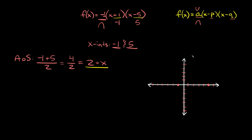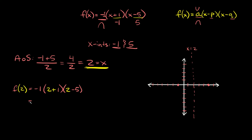We can draw that vertical line at x equals 2 as our axis of symmetry. To find the vertex, we plug in x equals 2 into the function: f of 2 equals negative 1 times 2 plus 1 times 2 minus 5. That's negative 1 times 3 times negative 3. Three times negative 3 is negative 9, and negative 9 times negative 1 is positive 9. So our y value is 9, and the vertex is at 2 comma 9.